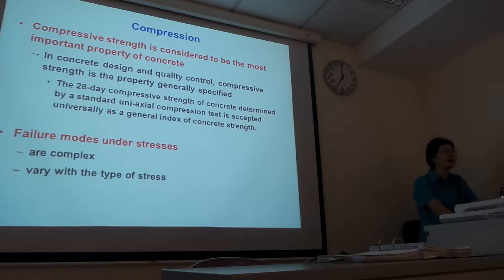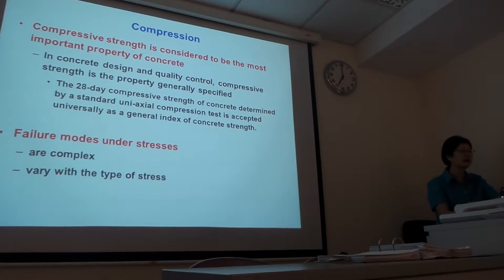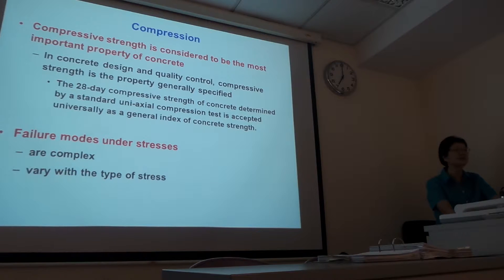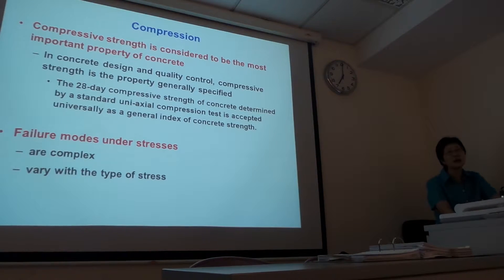We talked about elastic modulus and tensile strength; next is compressive strength. Compressive strength of concrete is considered the most important property of concrete. When you design reinforced concrete structures, the 28-day compressive strength is used for quality control. The 28-day compressive strength, determined by a standard uniaxial compressive test, is accepted as a general index of concrete strength.